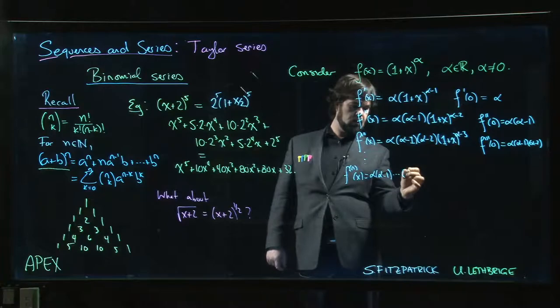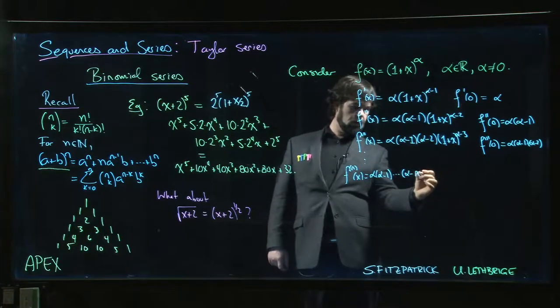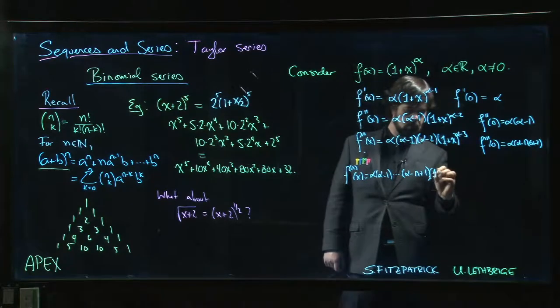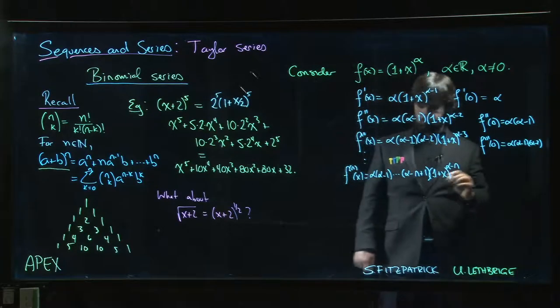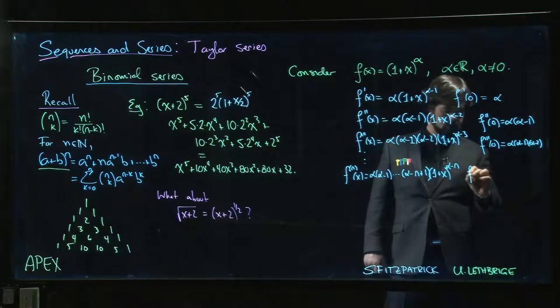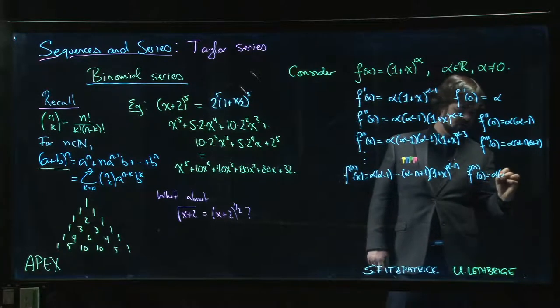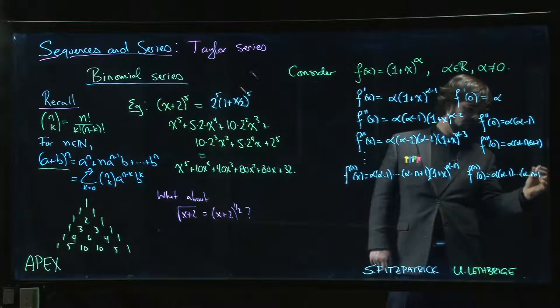And you keep going and you find that after n derivatives, alpha times alpha minus 1 times alpha minus—so not quite n, it's always one more—times alpha minus n plus 1 times 1 plus x to the alpha minus n. So the nth derivative at 0, we get alpha times alpha minus 1 down to alpha minus n plus 1.